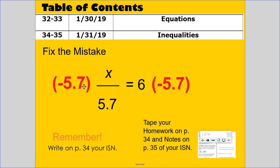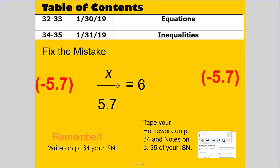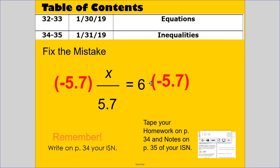I would like you to fix this mistake. I noticed on the previous assignment, people have done it this way. This is the equation: X divided by 5 and 7 tenths equals 6. Then I see students do it this way. Do you know what the mistake is? You can pause it at this time and figure it out. When you are ready to resume, please press start so you can see the mistake.